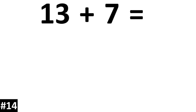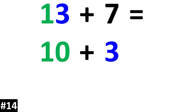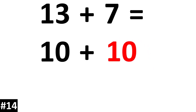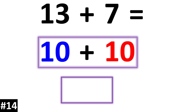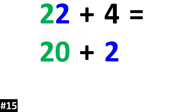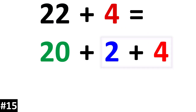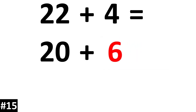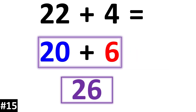13 plus 7. 13 is the same thing as 10 plus 3. If we add the other 7, 3 plus 7 gives us 10. 10 plus 10 is equal to 20. Next, 22 plus 4. 22 is 20 plus 2. If we add the 4, 2 plus 4 is equal to 6. 20 plus 6 is equal to 26.